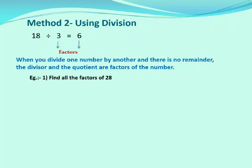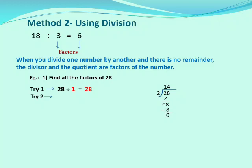Find all the factors of 28 using the division method. Try 1: every number is obviously divisible by 1, so 28 divided by 1 equals 28 — 1 and 28 are factors of 28. Try 2: 28 is an even number, so 28 is divisible by 2. 28 divided by 2 gives a quotient of 14, so 2 and 14 are factors of 28. Try 3: 28 is not coming in the table of 3, so not possible.